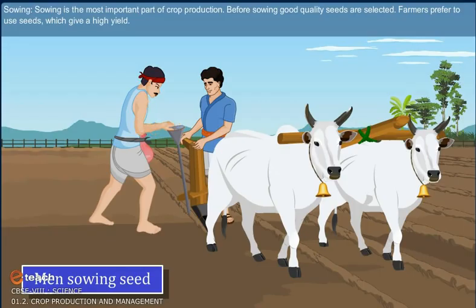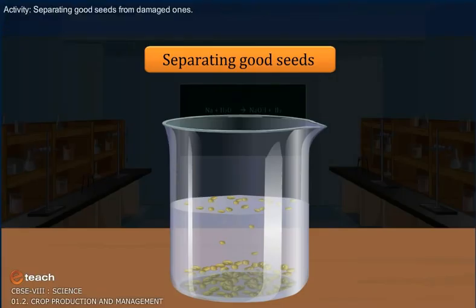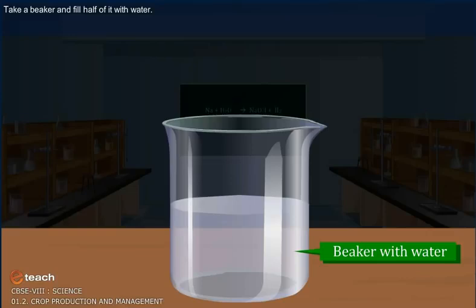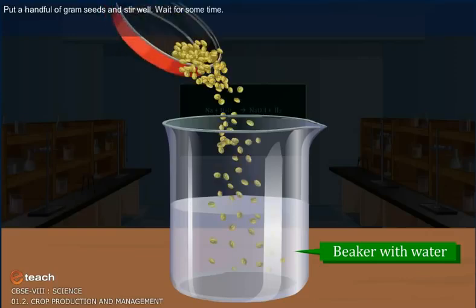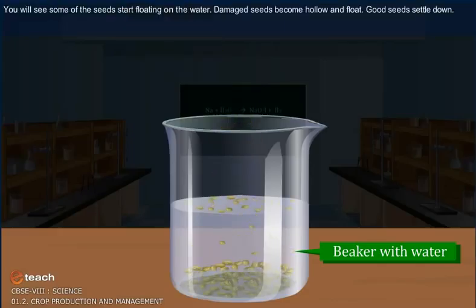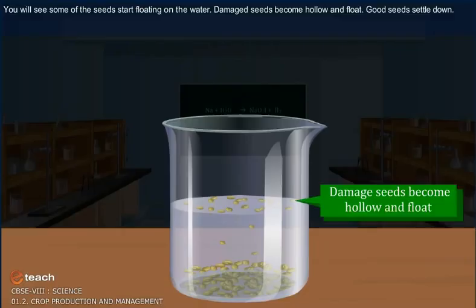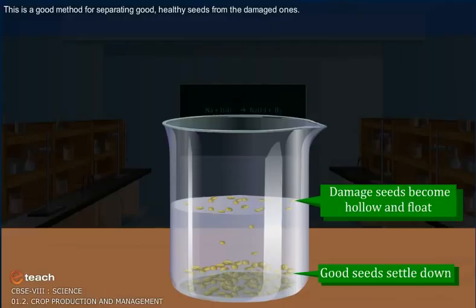Sowing is the most important part of crop production. Before sowing, good quality seeds are selected. Farmers prefer to use seeds which give a high yield. To separate good seeds from damaged ones, take a beaker and fill half of it with water. Put a handful of gram seeds and stir well. Wait for some time. You will see some of the seeds start floating on the water. Damaged seeds become hollow and float. Good seeds settle down. This is a good method for separating good healthy seeds from damaged ones.